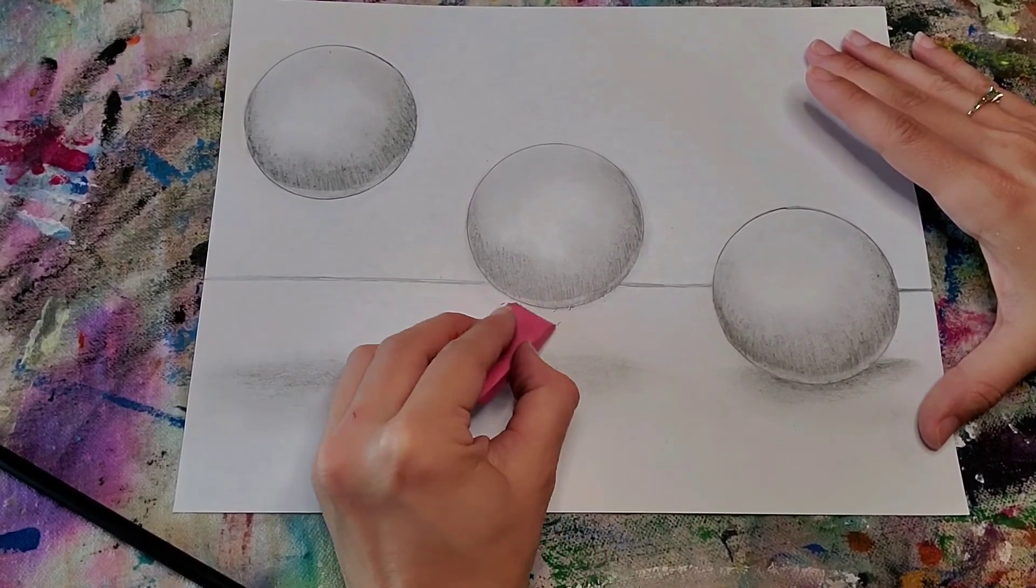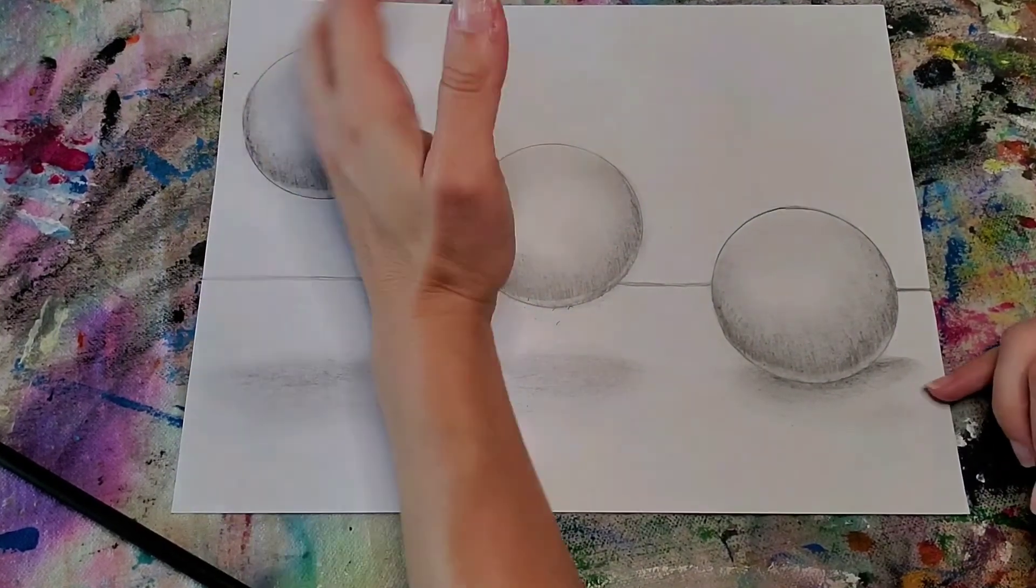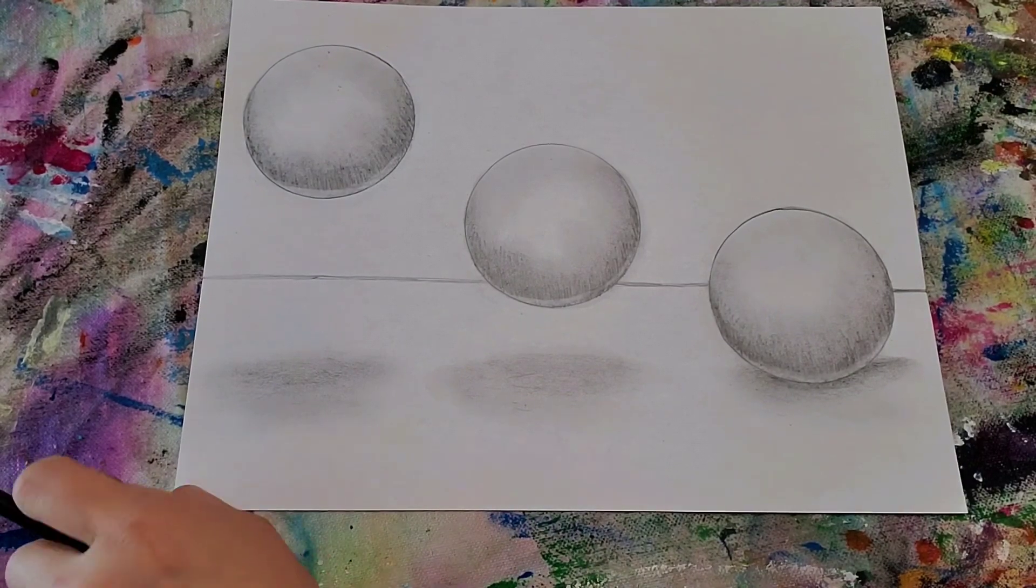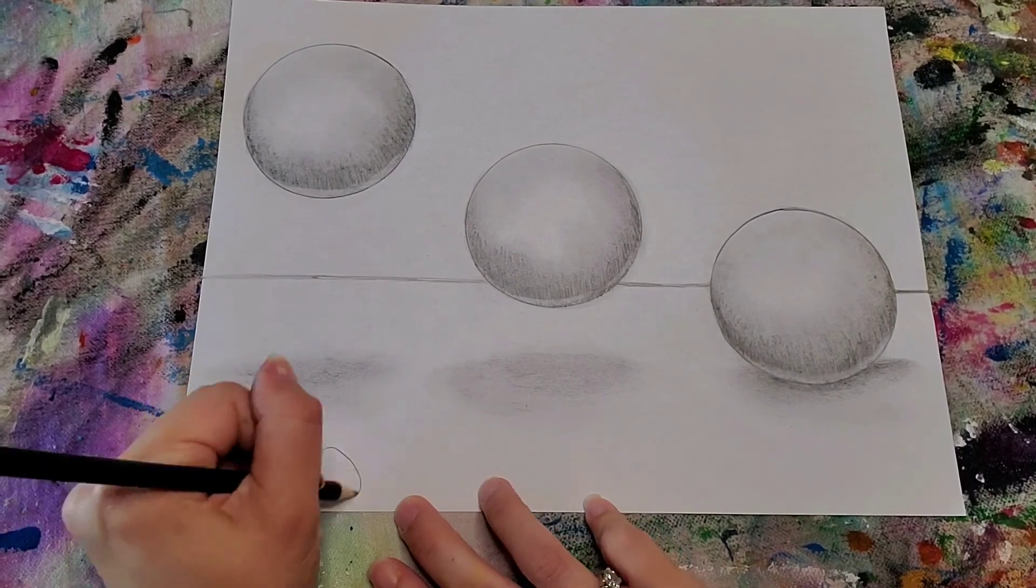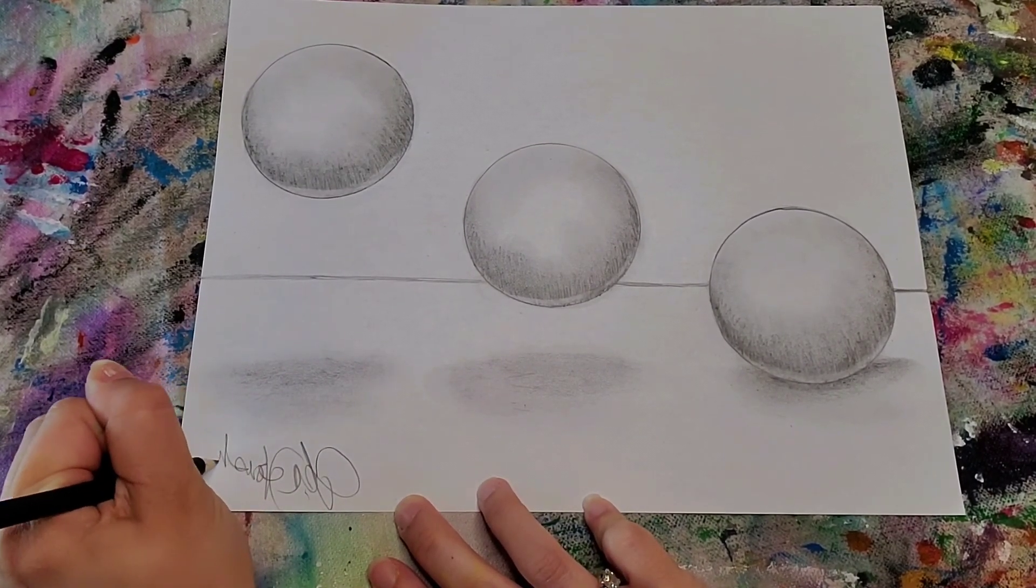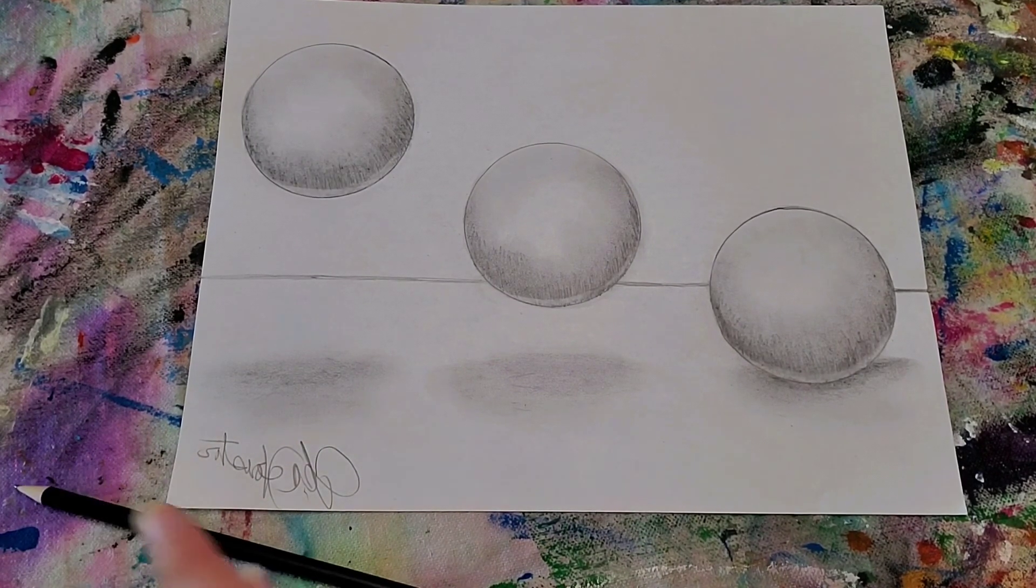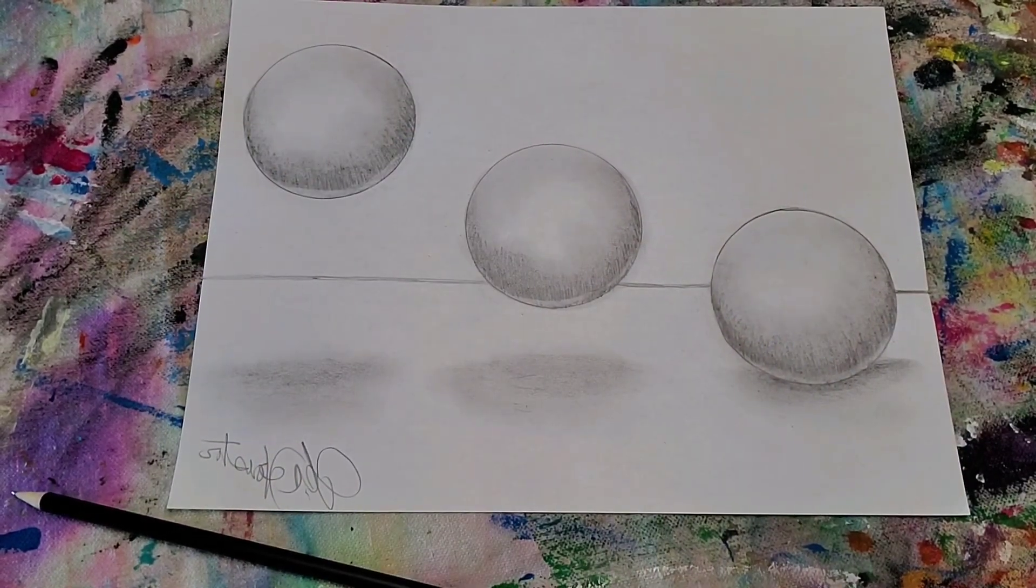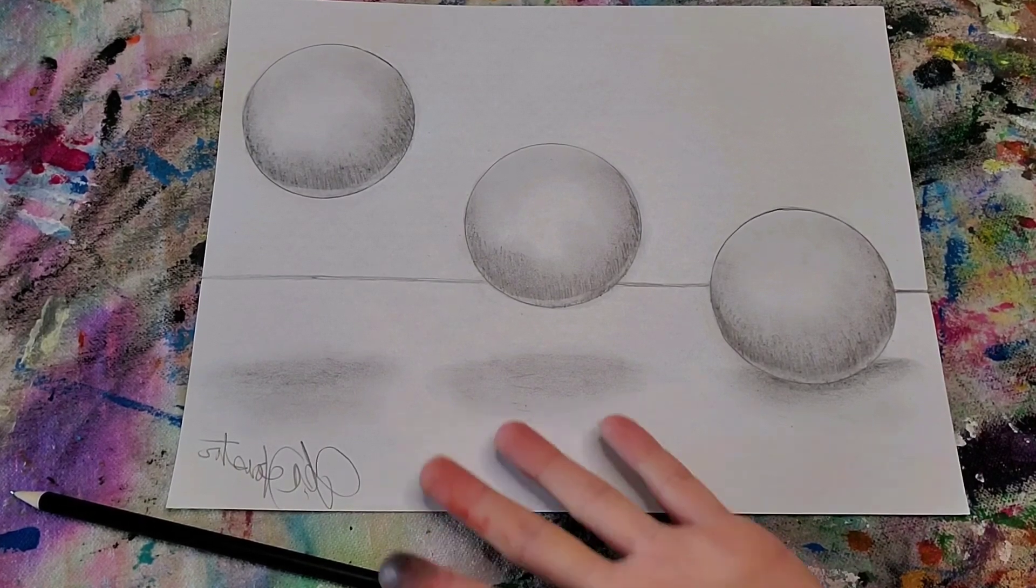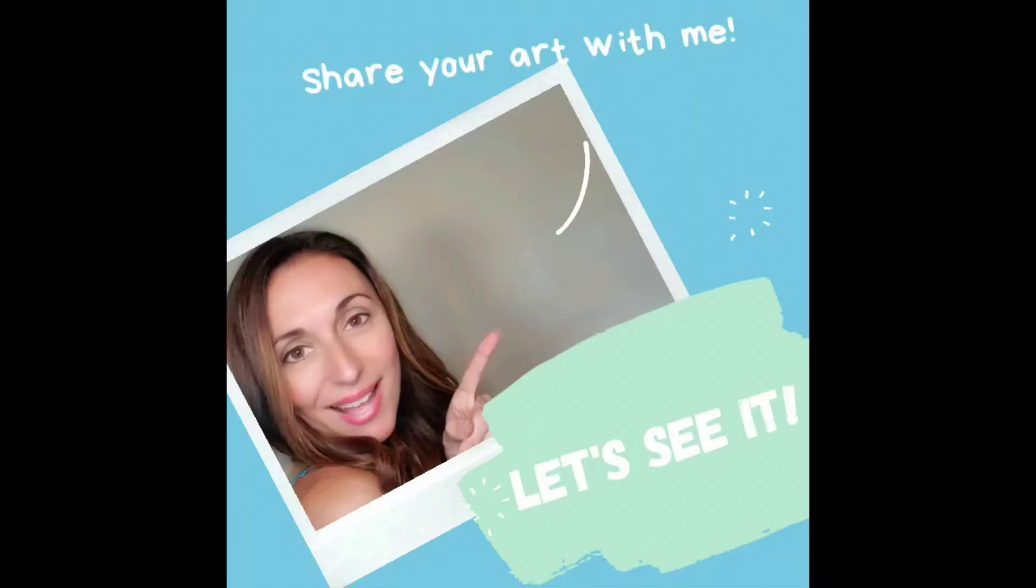And you need to sign it. Okay, so I'm going to sign it right in the corner. And you're all done. Make sure you share your pictures with me. I'd love to see how your circles, your floating circles, came out. And I'll see you next time.